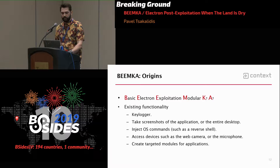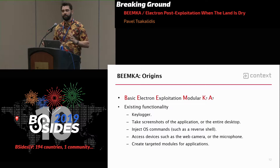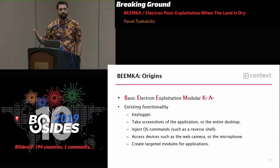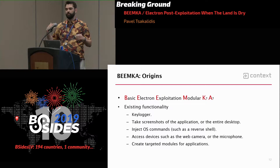So what exactly is Electron, and why do more and more companies use it? It practically runs Node.js in the backend and Chrome in the frontend — it's effectively Chrome in a box. It was developed by GitHub around 2013, and their first big project was the Atom code editor. Why do companies use it? It's cost-effective: write once, cross-compile across operating systems, and you don't need to hire separate platform developers. You can reuse the code from your website, put it in the Electron application, and that's it.